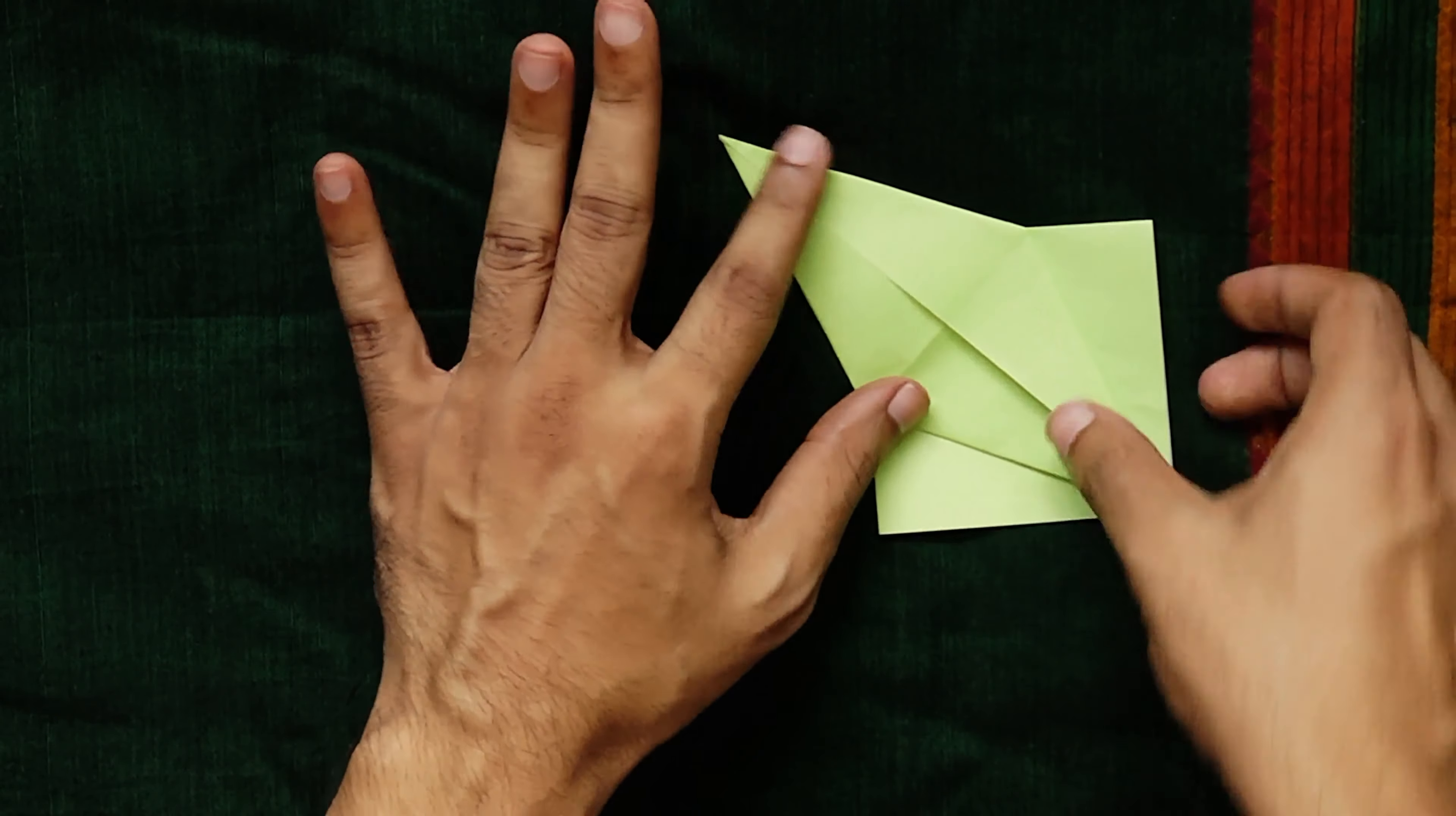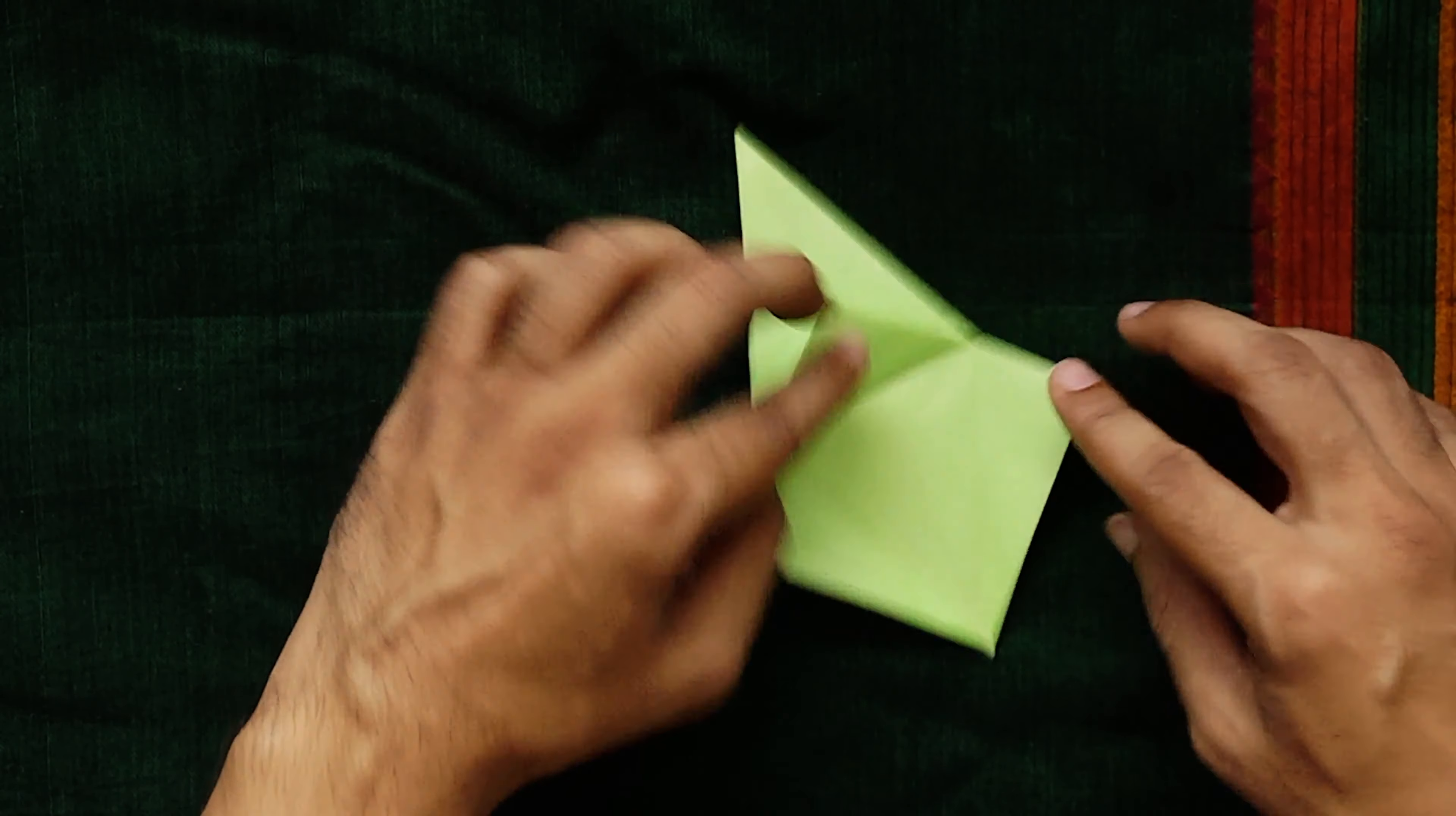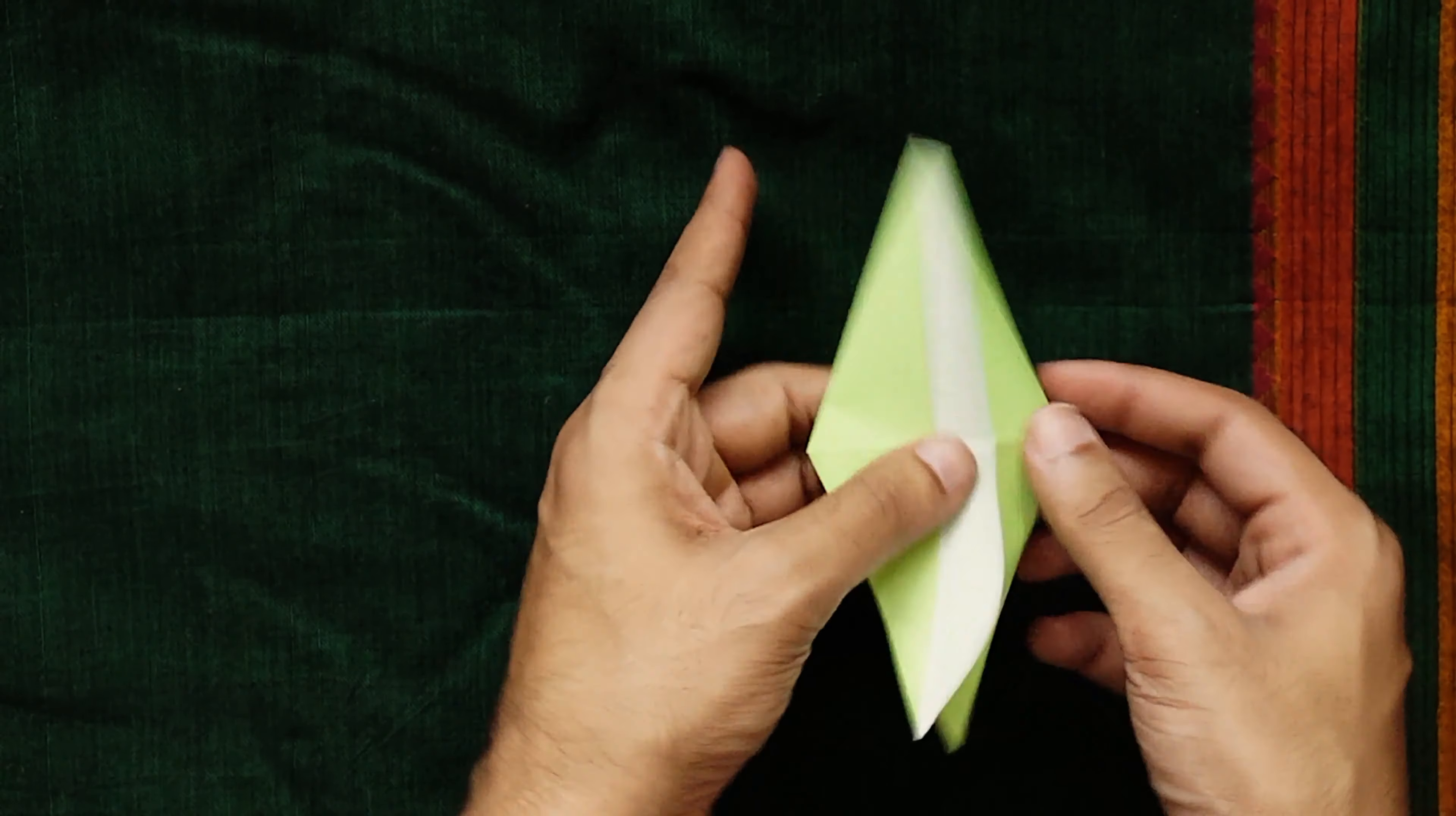Flip the model over and repeat the steps on the other side. You'll end up with an evenly tall and thin diamond shape.